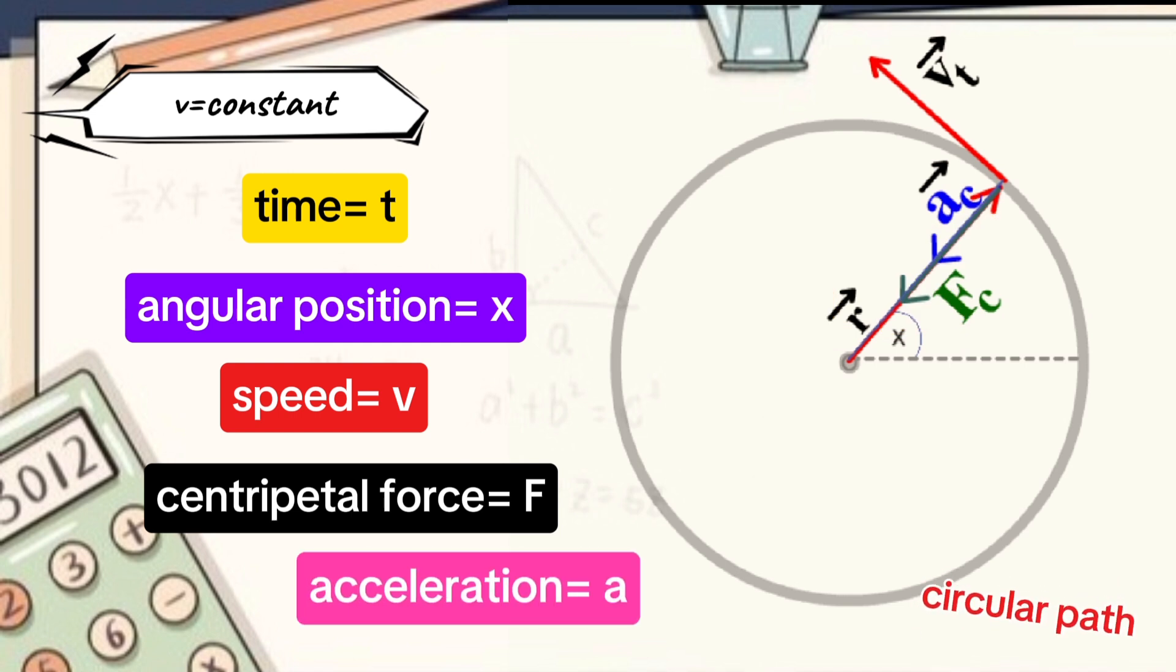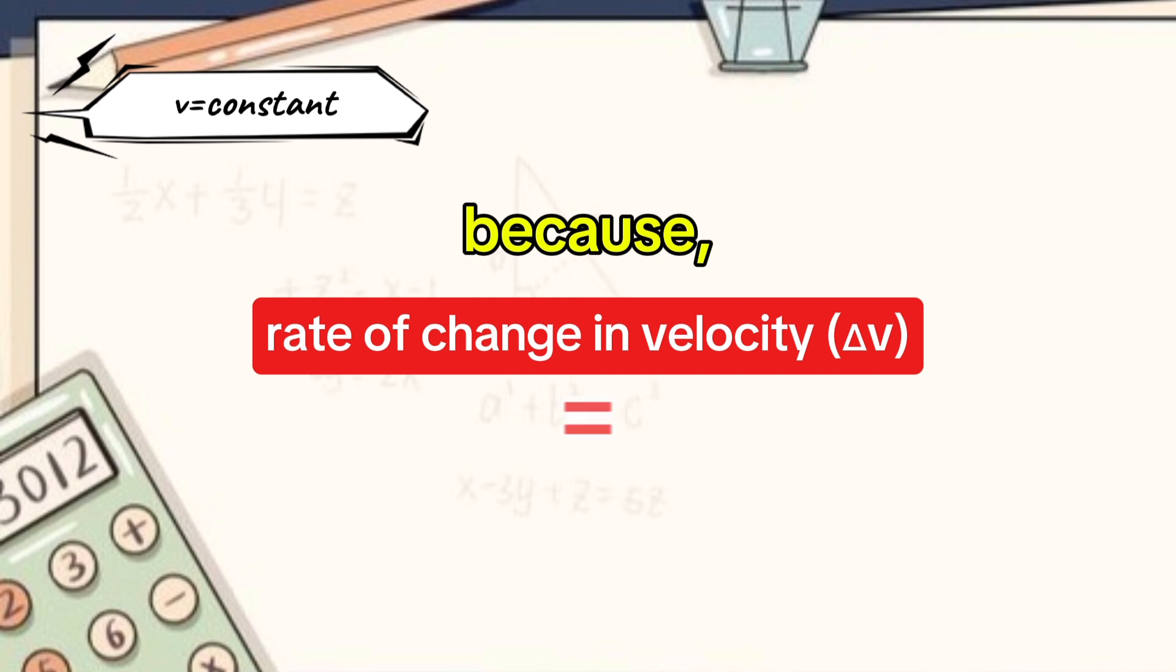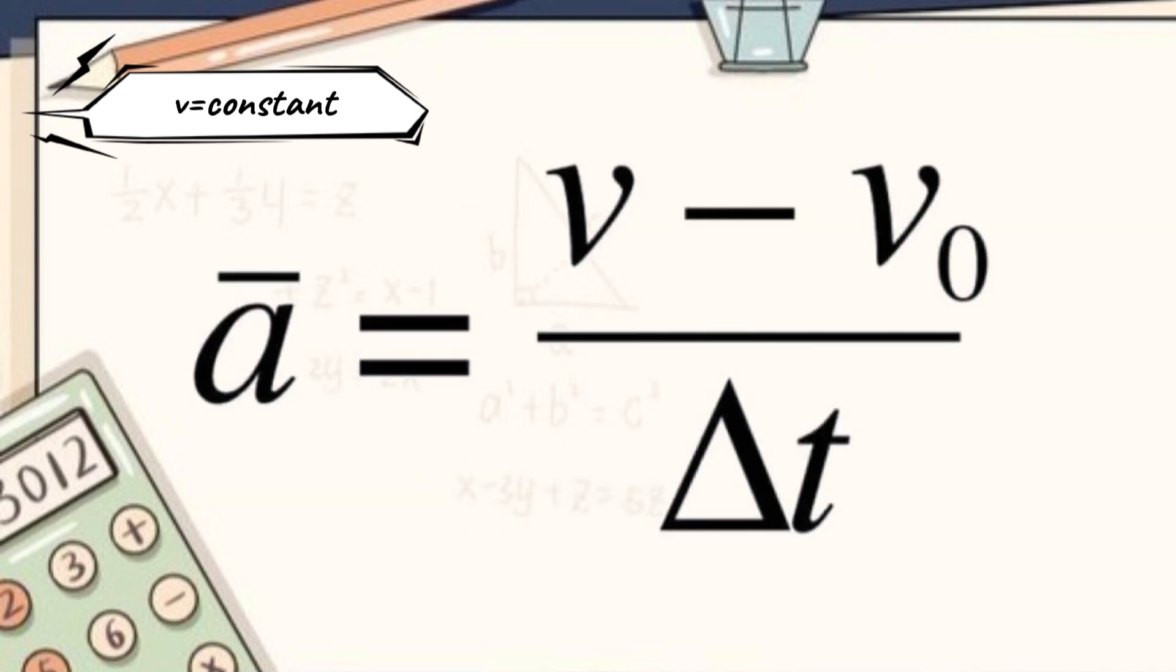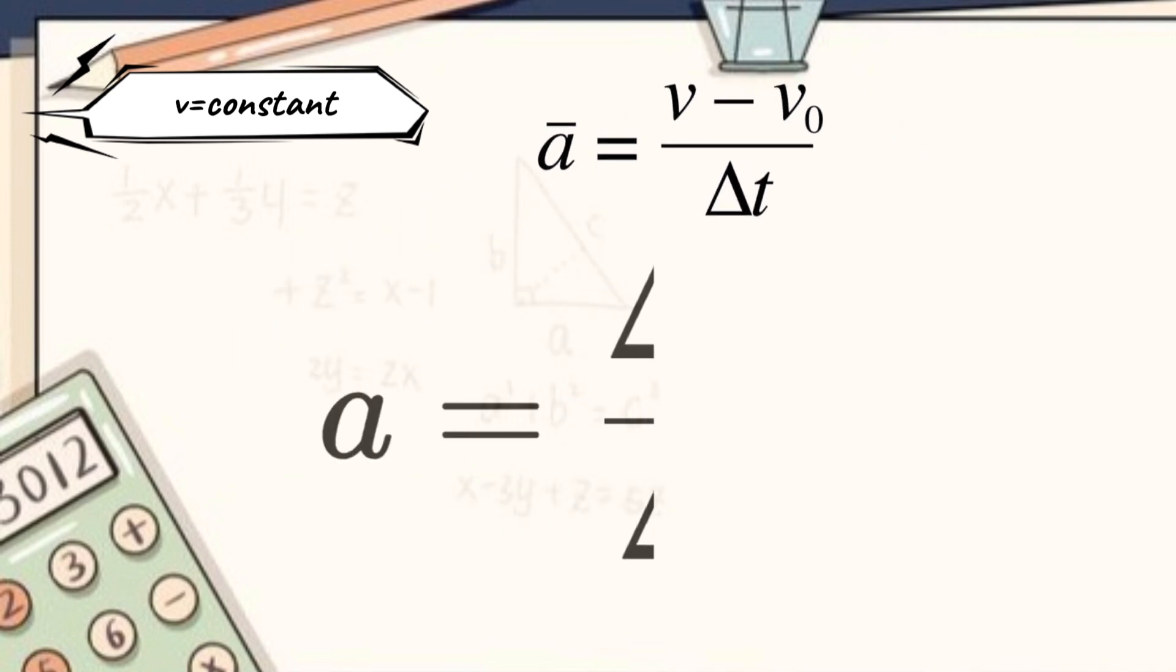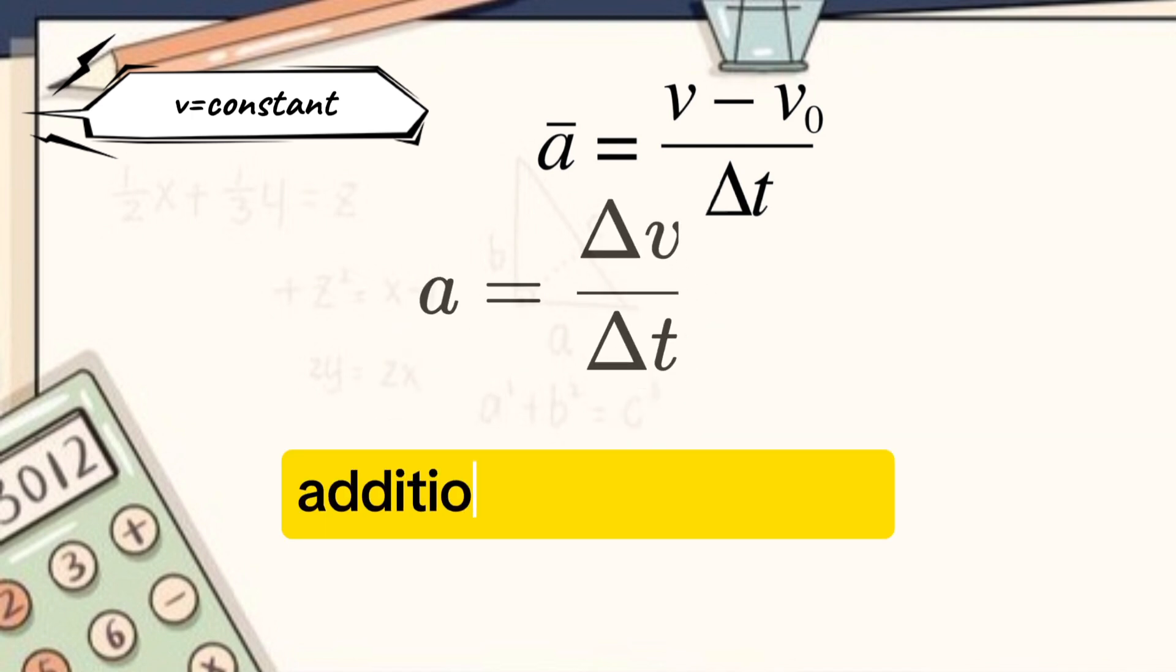This means acceleration will also be in the same direction. And hence, the new change in velocity, that is, the additional velocity gained by object, will also be in the same direction. Let this additional velocity be delta v.